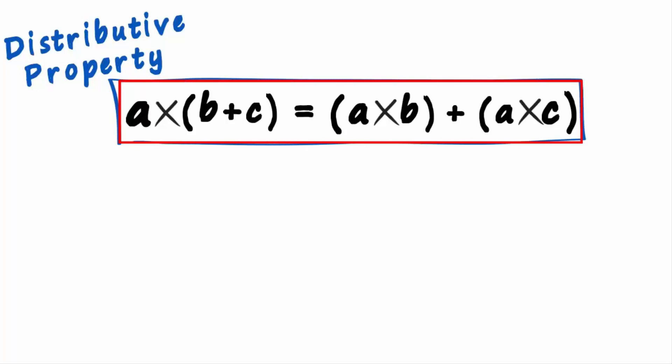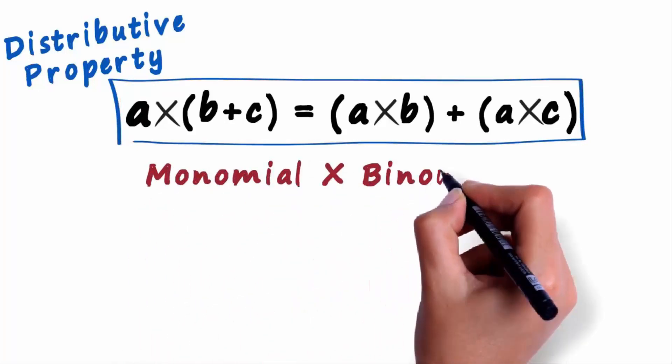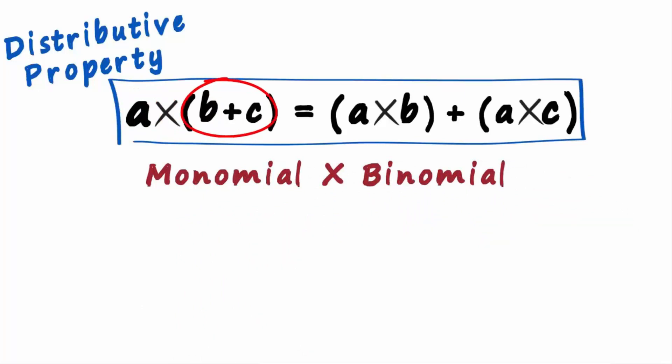This property will help us multiply a monomial and a binomial: one term multiplied by the sum of two terms.